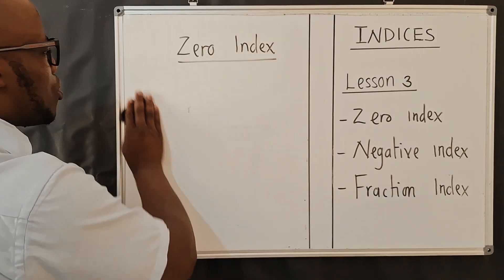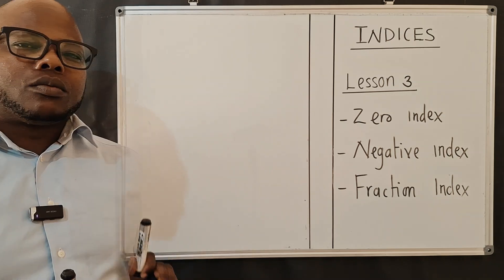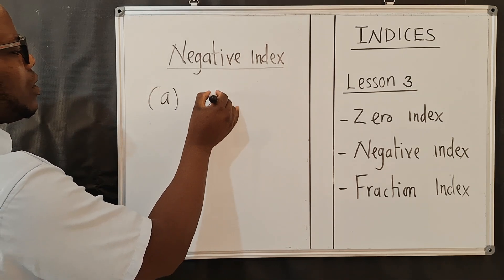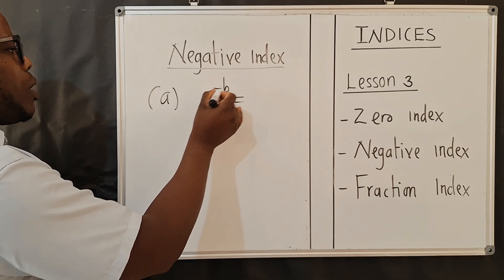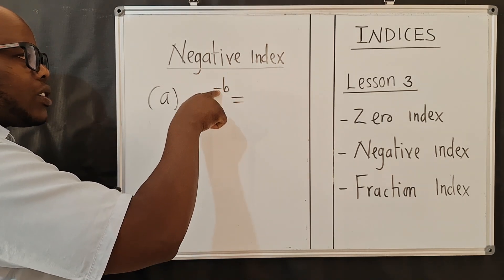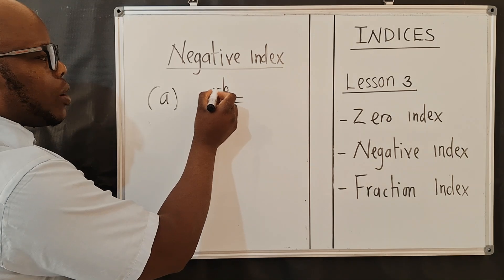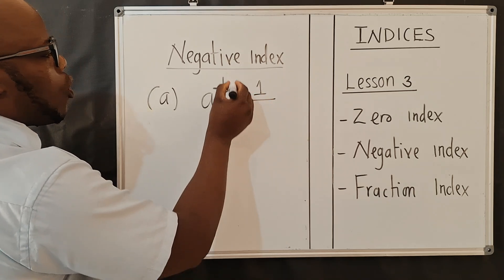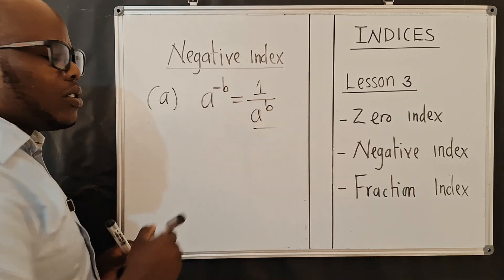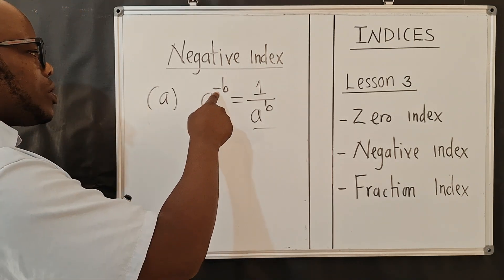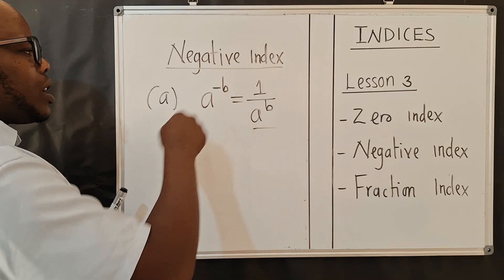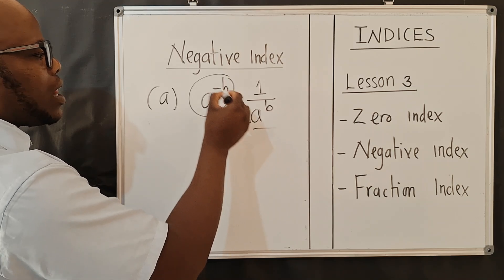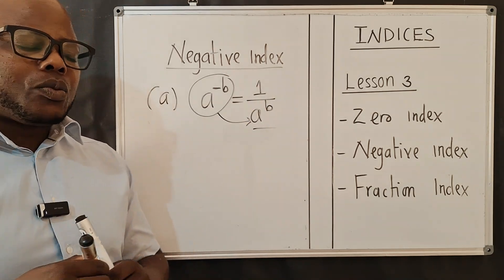Let's go to the next law: the negative index. When you've got a to the power negative b, the exponent has a negative sign. You need to change this to a positive sign. To do that, write one over a to the power b — the negative sign disappears. In other words, the moment you see a negative exponent, the whole term moves to the denominator and you keep a one on top.